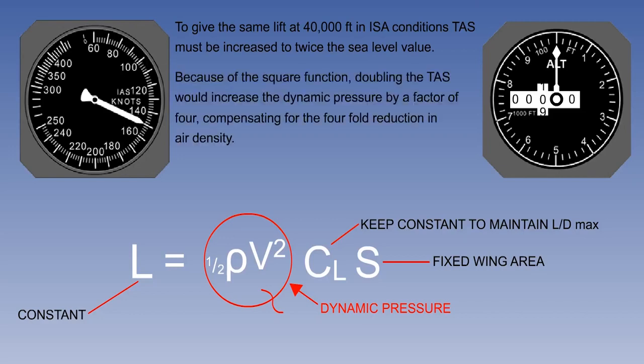Because of the square function of the TAS, doubling it would increase dynamic pressure by 4, compensating for the 4-fold drop in density.